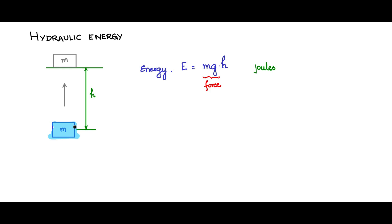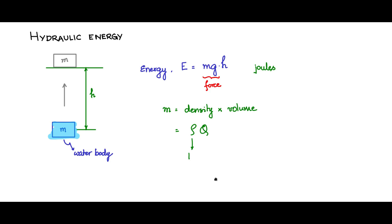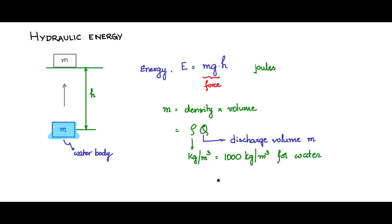Instead of just being some mass, let us say this is a water body. The mass can be expressed as density times volume — density of water rho times volume q. Density of water in SI units is 1000 kg per cubic meter, and q is called the discharge volume expressed in cubic meters. Substituting mass as rho×q, the energy is given by rho×q×g×h joules.